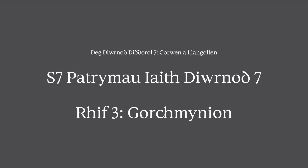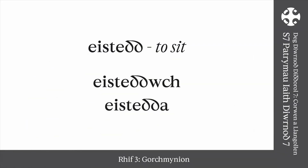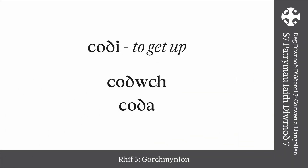Rhyf tri. Gorchmynion — Commands. In Mynediad, you learned about commands. In Welsh, when giving someone a command or instruction, a special ending is needed. To make a verb into a command, you need the ending -wch for chi or -a for ti. Eistedd — Eisteddwch — Eisteddwch. This works for most words. However, if the verb ends with a vowel, you drop the final vowel before adding the ending.